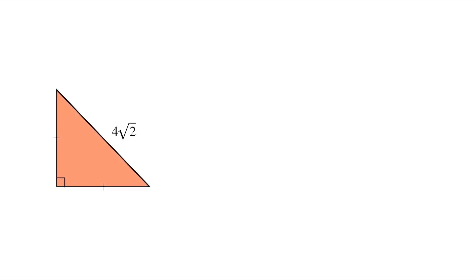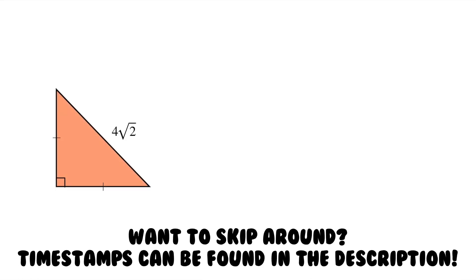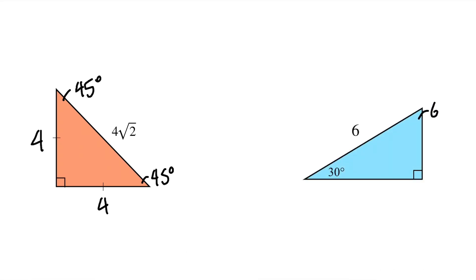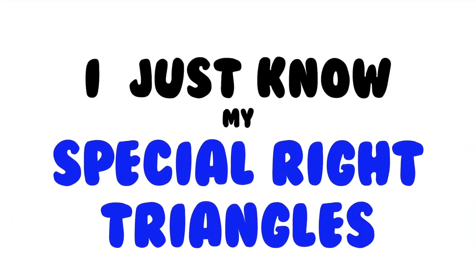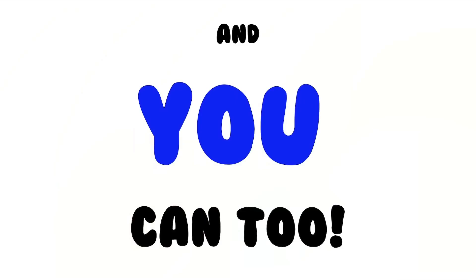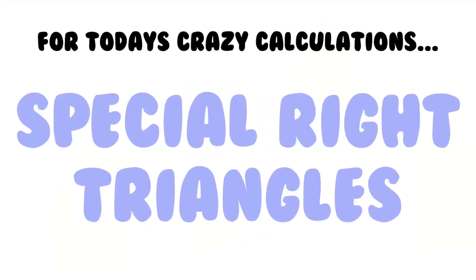Believe it or not, when I look at this right triangle right here, it only takes me a few moments to fill out all of its angles and side lengths. This is 45 degrees, this is 45 degrees, this is 4, and this is 4. And the same with this triangle right here — this is 60 degrees, this is 3, and this is 3 root 3. So how did I do that? I'm not magical or a human calculator. I just know my special right triangles. And you can too, because you're watching Crazy Calculations, and today we're going to be learning about special right triangles.